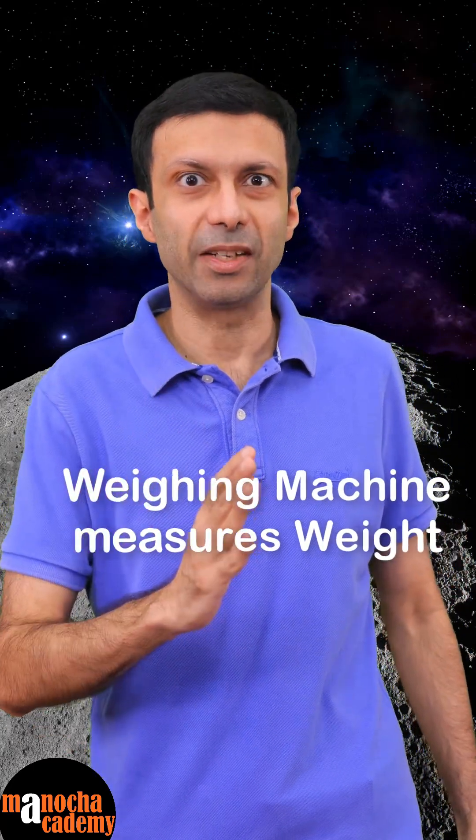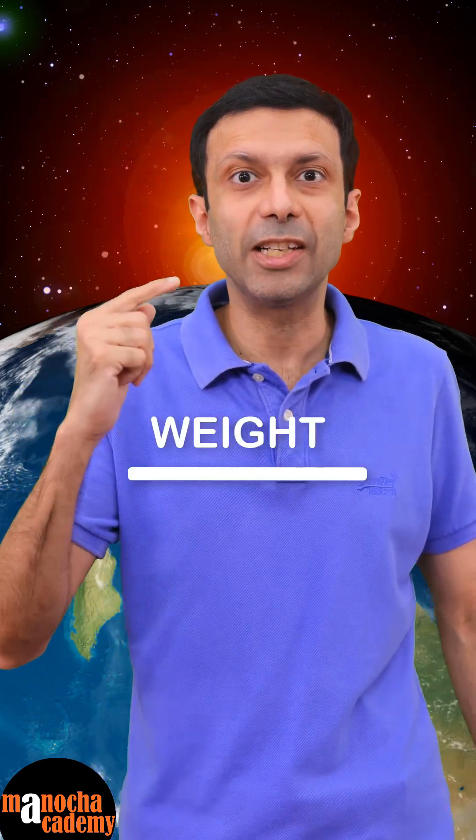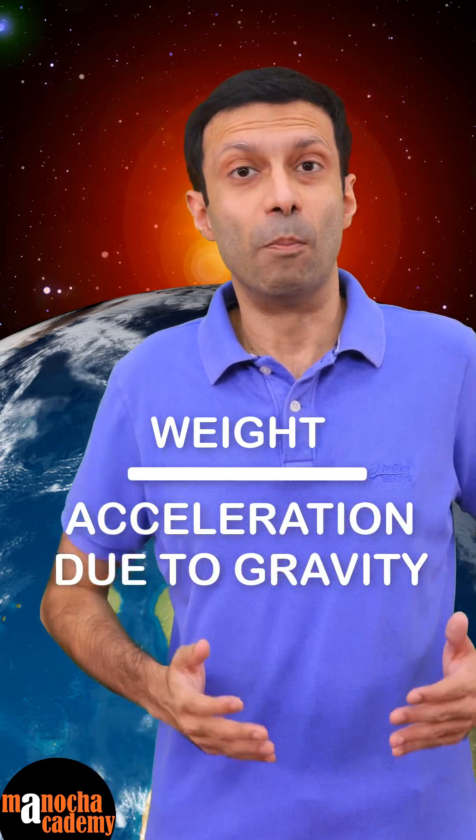The weighing machine measures the weight, which is the force of gravity pulling you towards the Earth or the moon, and divides by the acceleration due to gravity to give you the mass. So my weight is really 600 Newton.